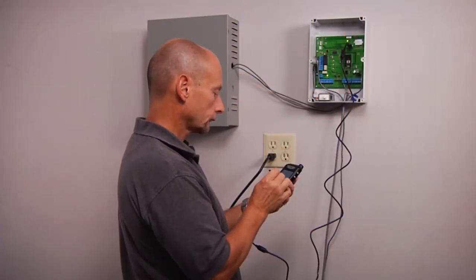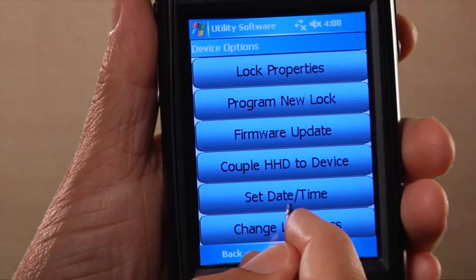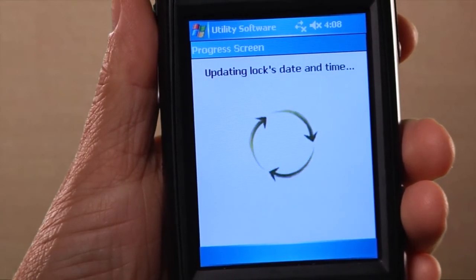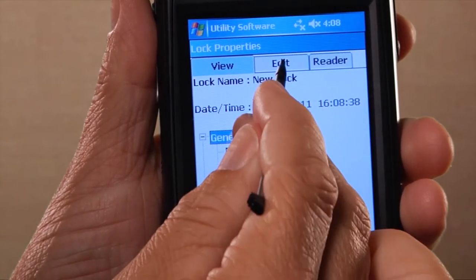Once coupled, review each option to ensure the setting is correct for your application. Pay close attention to the set date and time settings and relay output settings, which can be found in the lock properties menu.